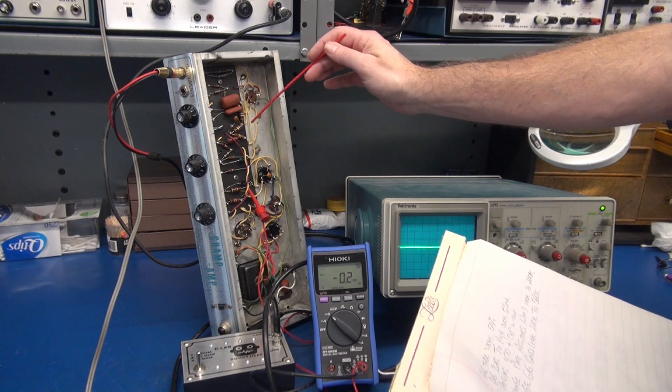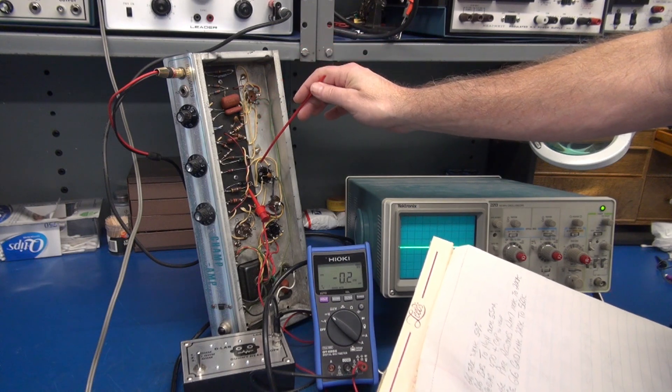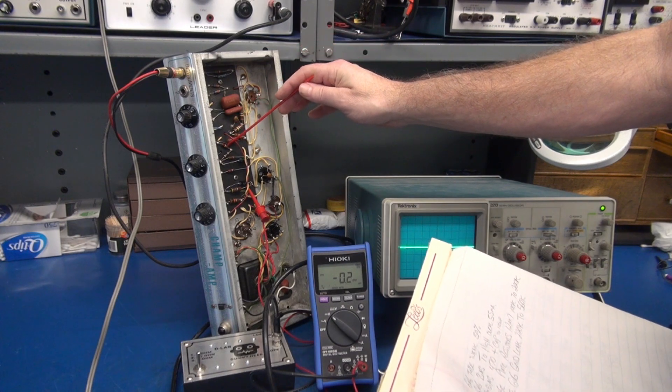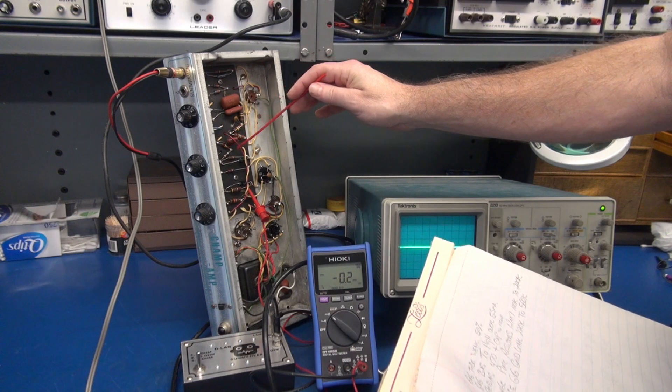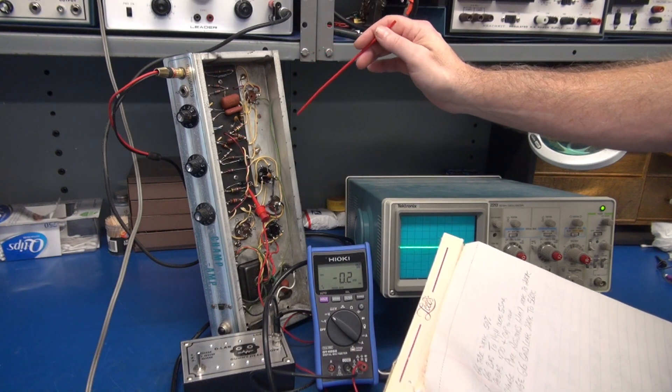We're also going to change the resistor which is the 6V6 grid leak resistor. Currently it is 220k. We're going to install a 560k.